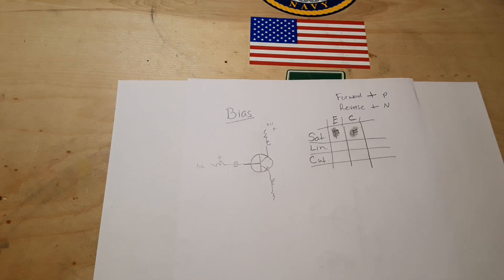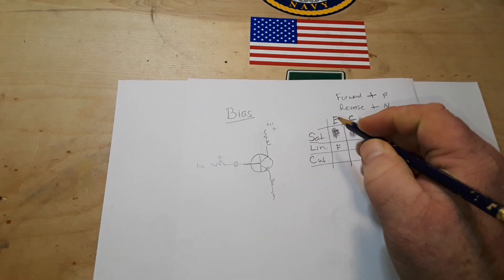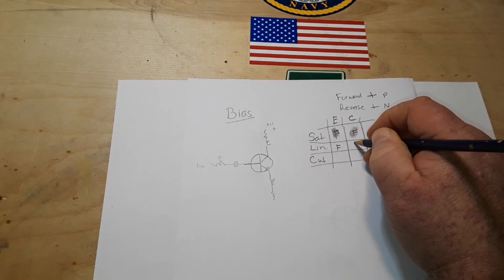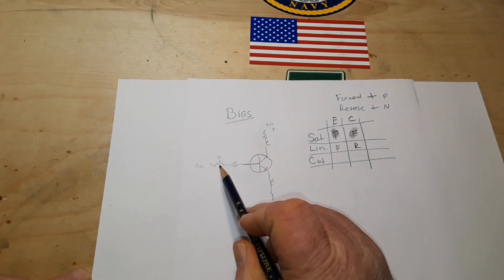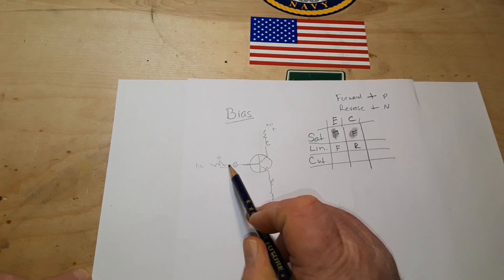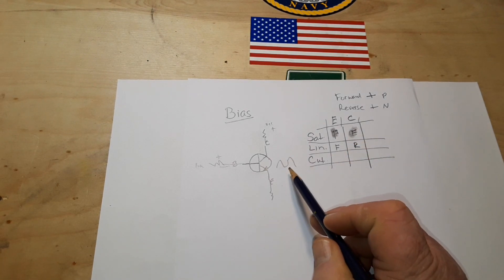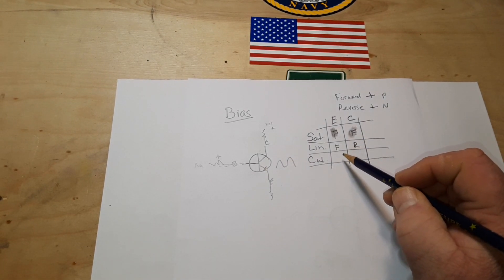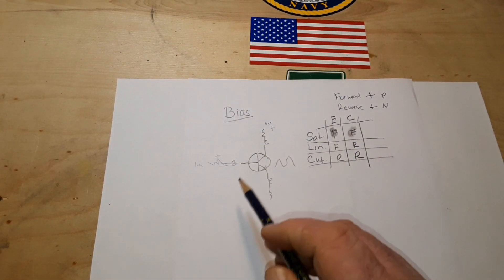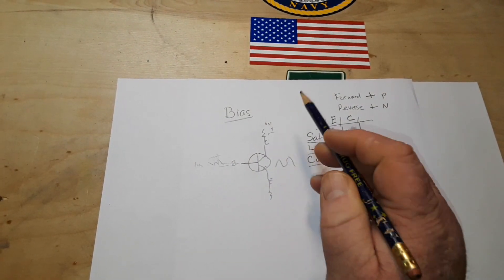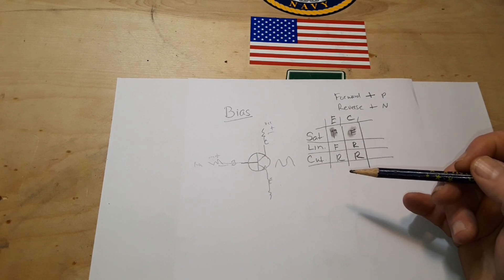When we get to the linear region our emitter junction is forward biased while our collector junction is reverse biased. Now our small signal here yields a corresponding larger signal here. In the cutoff region we reverse bias both of these. Negative voltage here, negative voltage here, nothing happens. It acts as a standard switch.